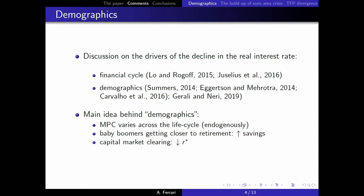The main idea behind the demographics theme is that the marginal propensity to consume varies across the life cycle. Younger households have a higher marginal propensity to consume and can sometimes be borrowing-constrained, while older households — especially middle-aged close to retirement — tend to save more for retirement. So in an environment where baby boomers in the Western world were aging and getting closer to retirement, you had an increase in savings and, through market clearing of savings and capital, a decrease in the natural interest rate.